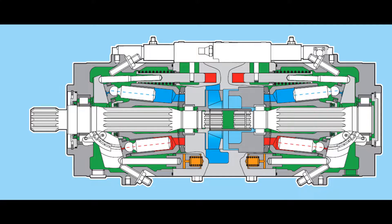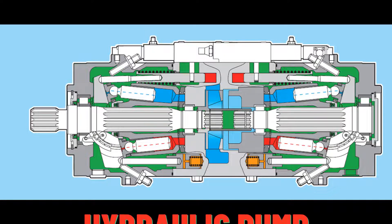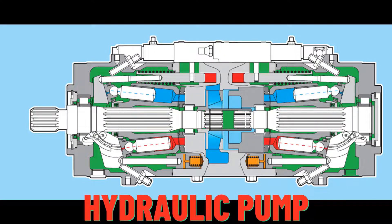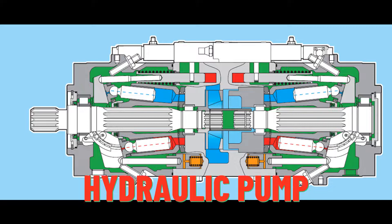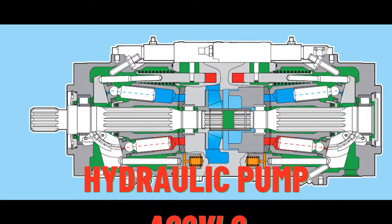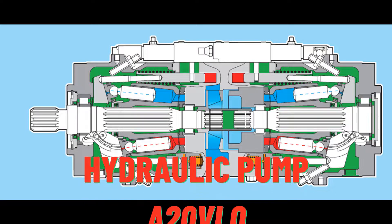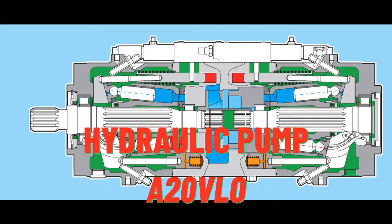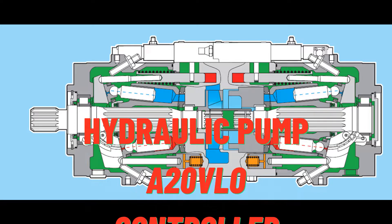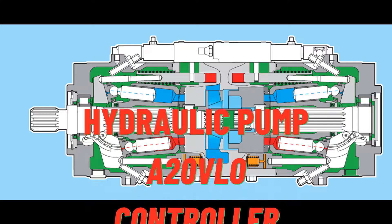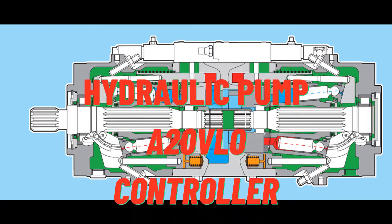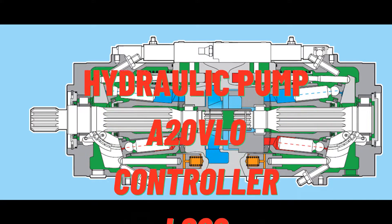A wide variety of controls are available. Setting of the constant power control is possible via external adjustments, even when the unit is operating, but only with power control. The pump is available with a through drive to mount a gear pump or a second axial piston pump.